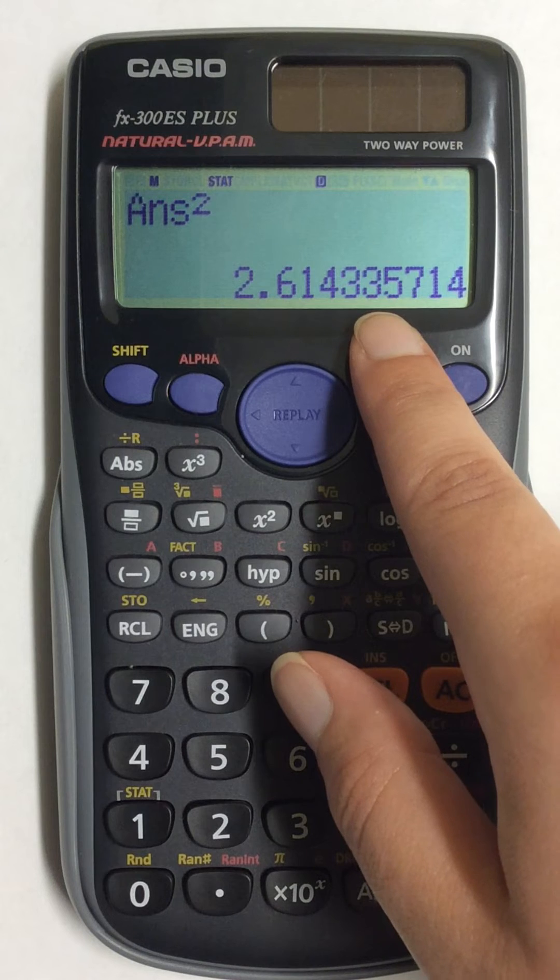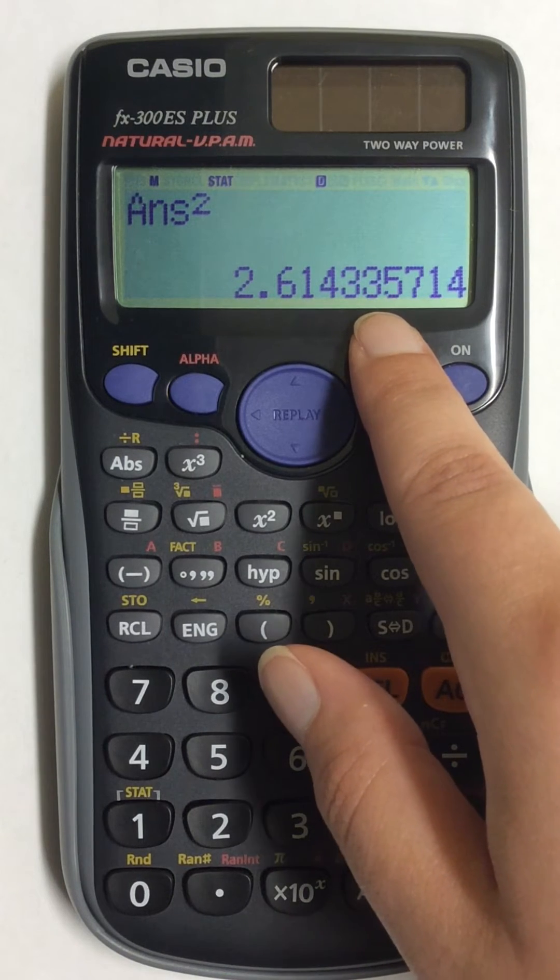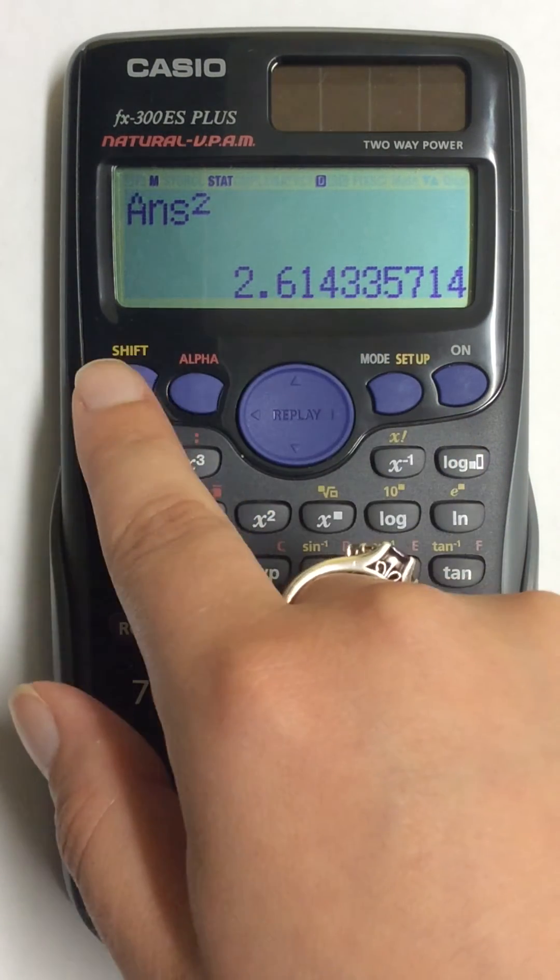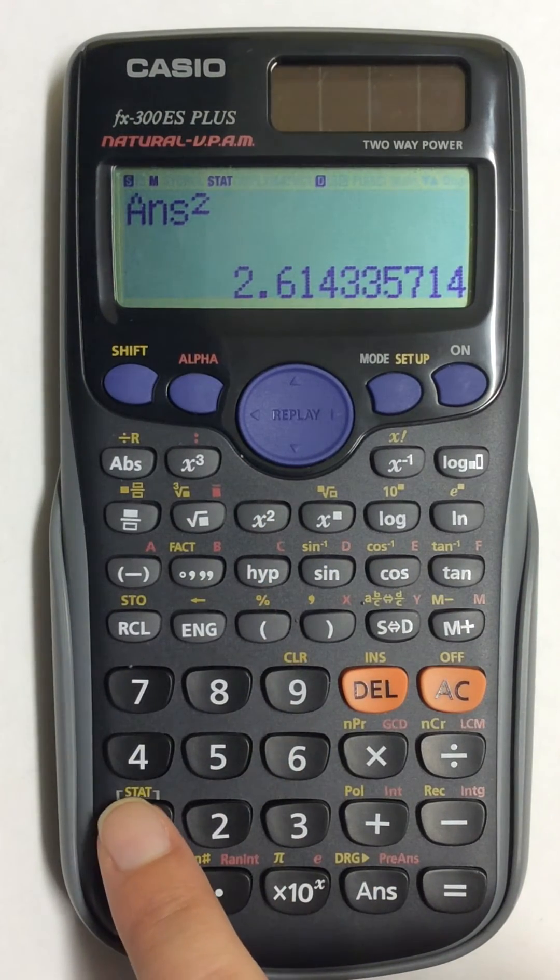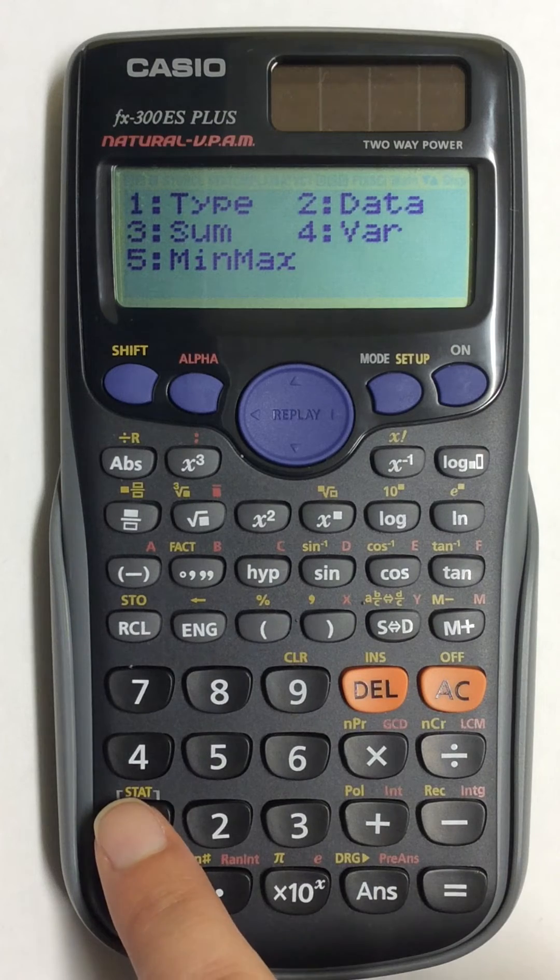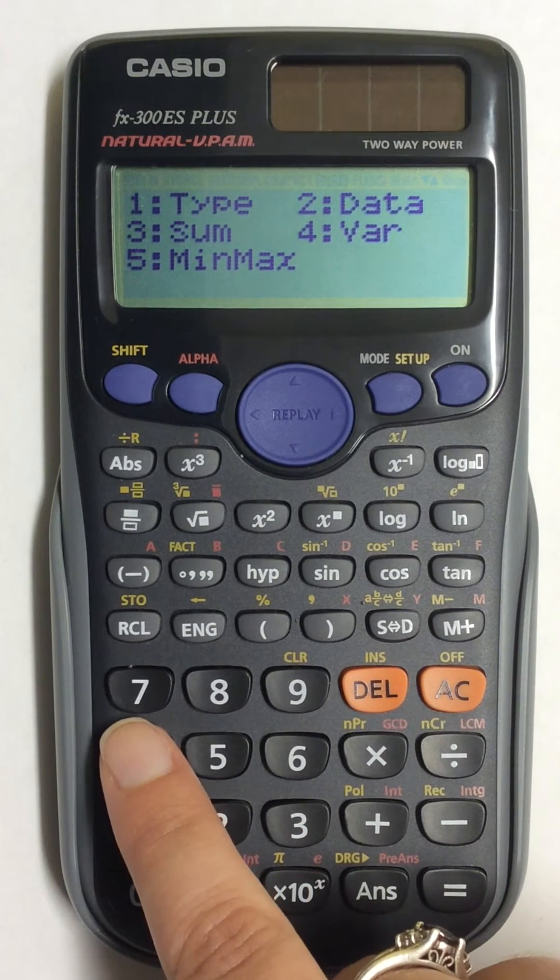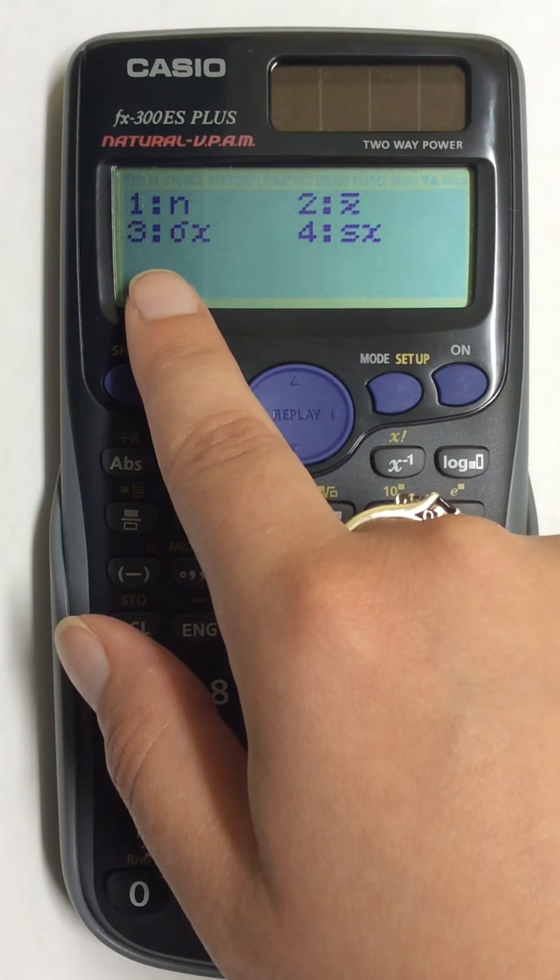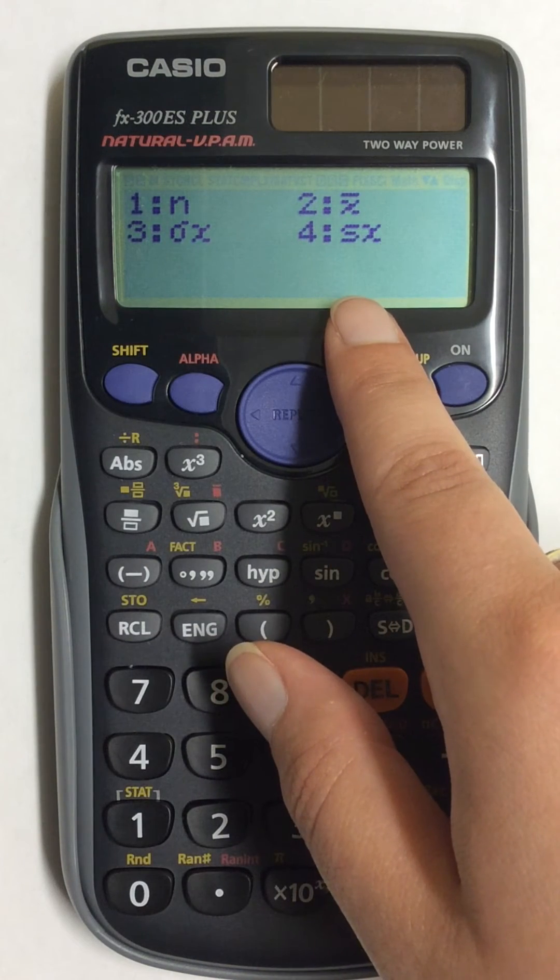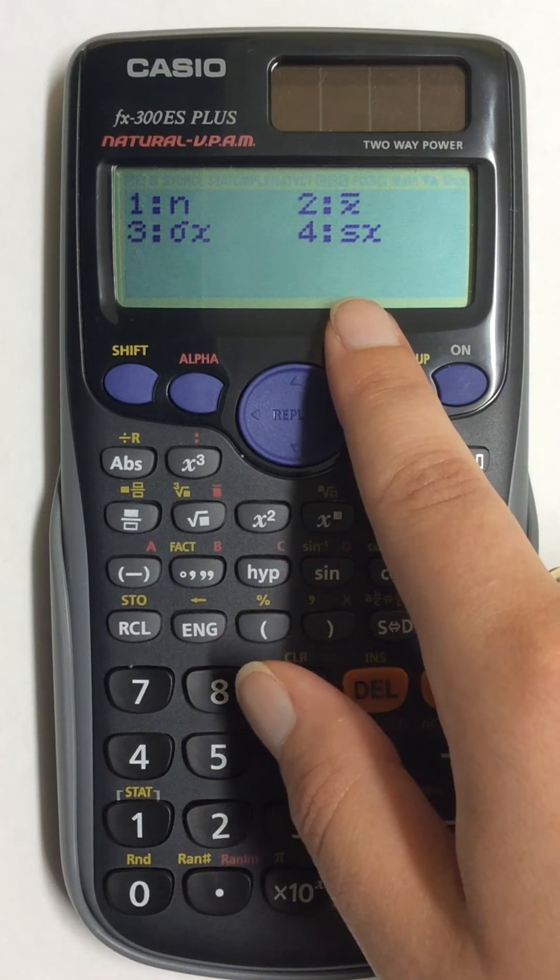You can also get it directly if you don't need to find standard deviation by going to SHIFT and 1, going back to number 4, choosing either population or sample standard deviation, either one.